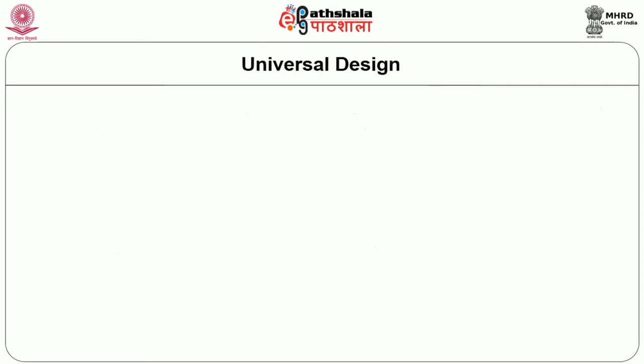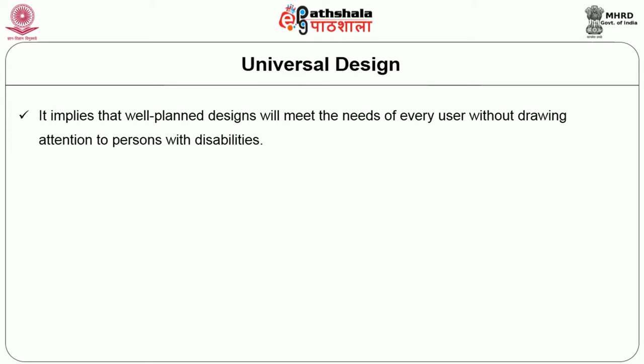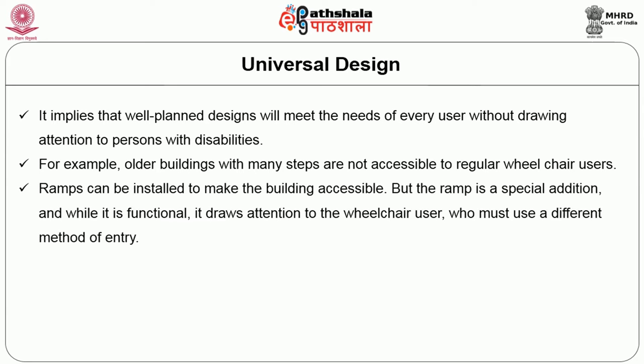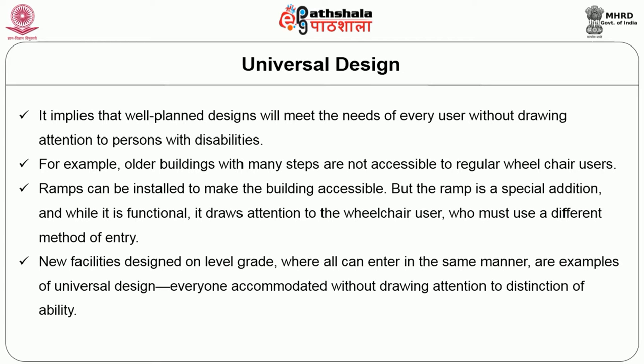Universal Design implies that well-planned designs will meet the needs of every user without drawing attention to persons with disabilities. For example, older buildings with many steps are not accessible to regular wheelchair users. Ramps can be installed to make the building accessible, but the ramp is a special addition — while it is functional, it draws attention to the wheelchair user who must use a different method of entry. New facilities designed on level grade where all can enter in the same manner are examples of universal design: everyone accommodated without drawing attention to distinction of ability.